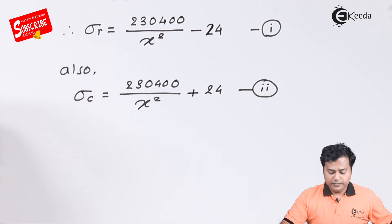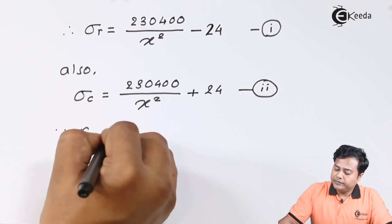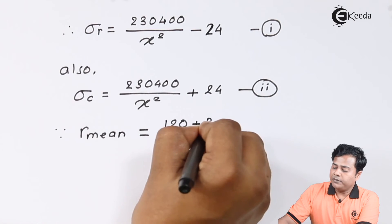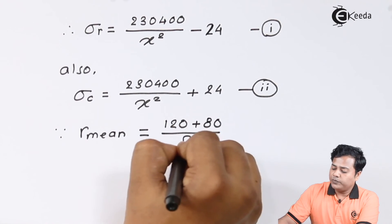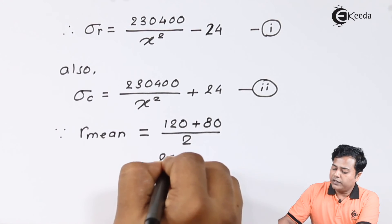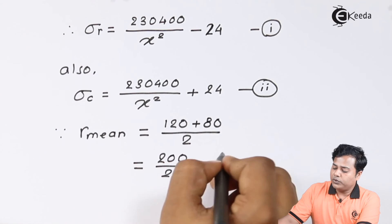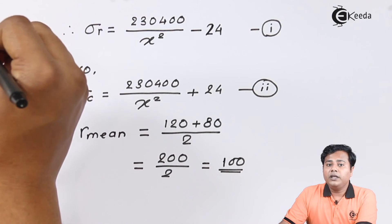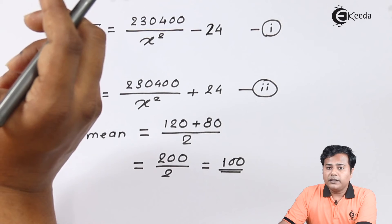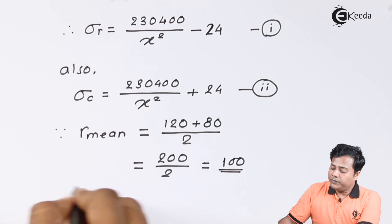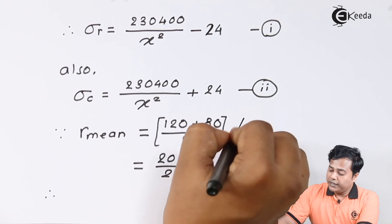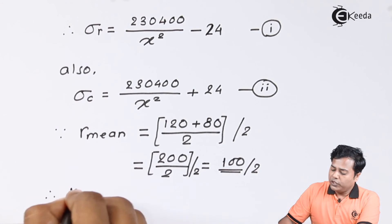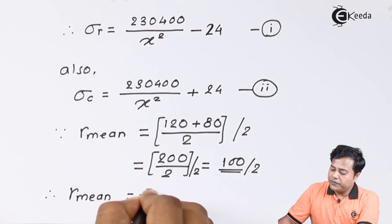The mean radius: R mean equals (maximum radius 120 plus minimum radius 80) divided by 2, which gives 100. Since this is only the diameter, dividing again by 2 gives the mean radius as 50 mm.